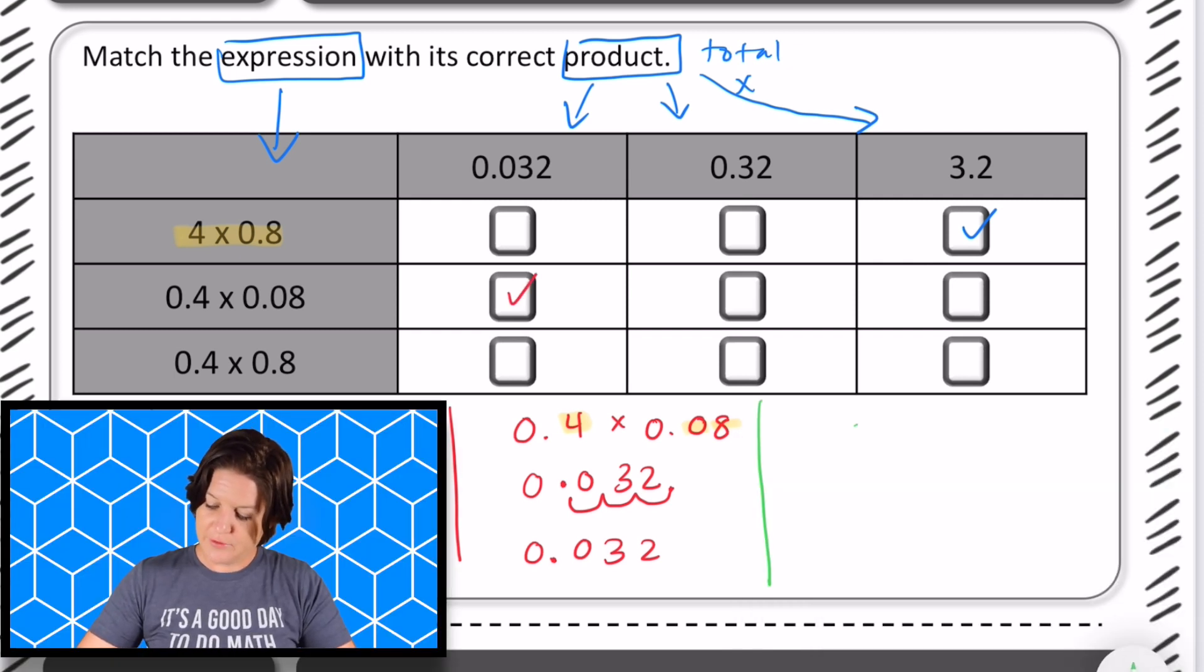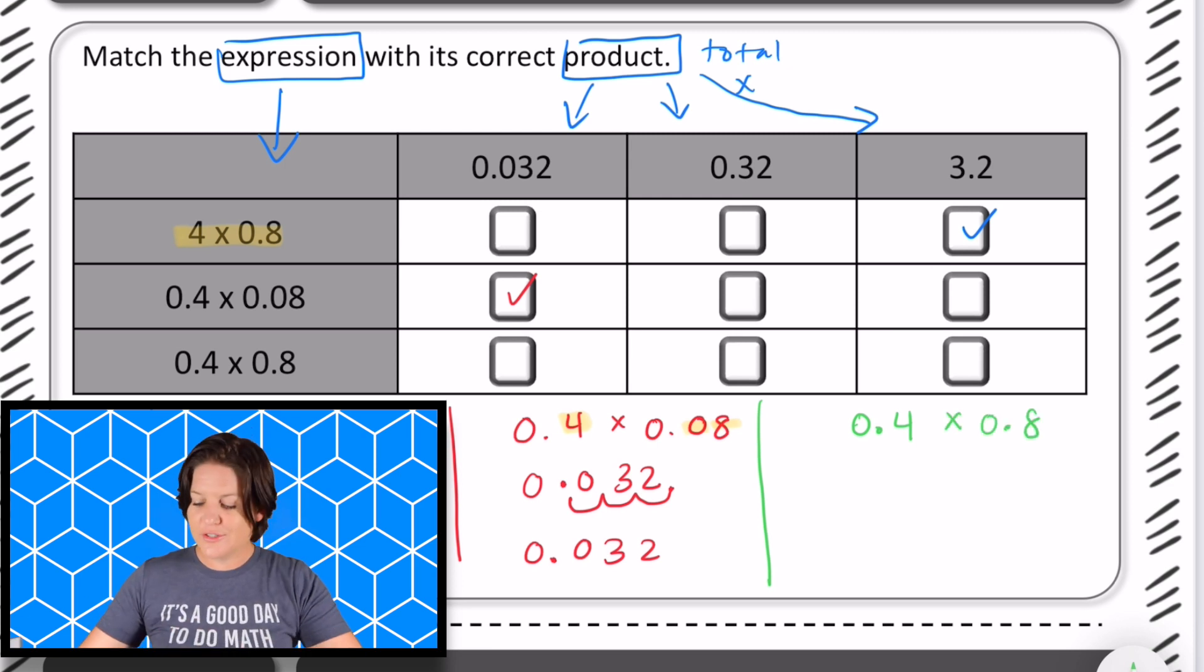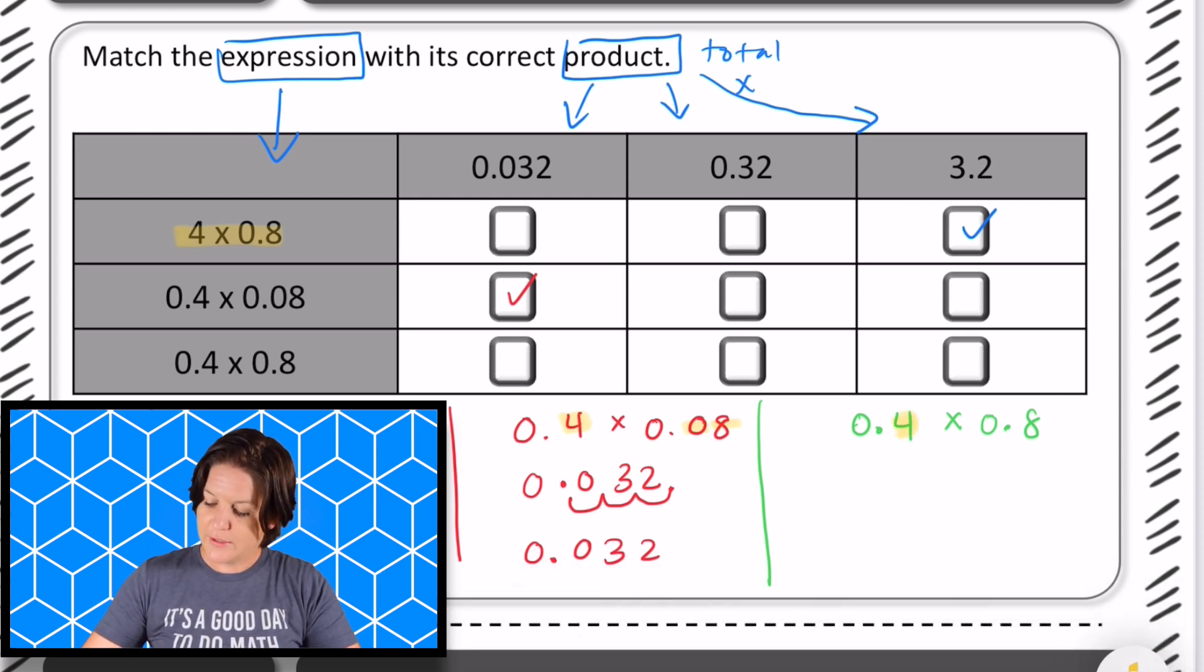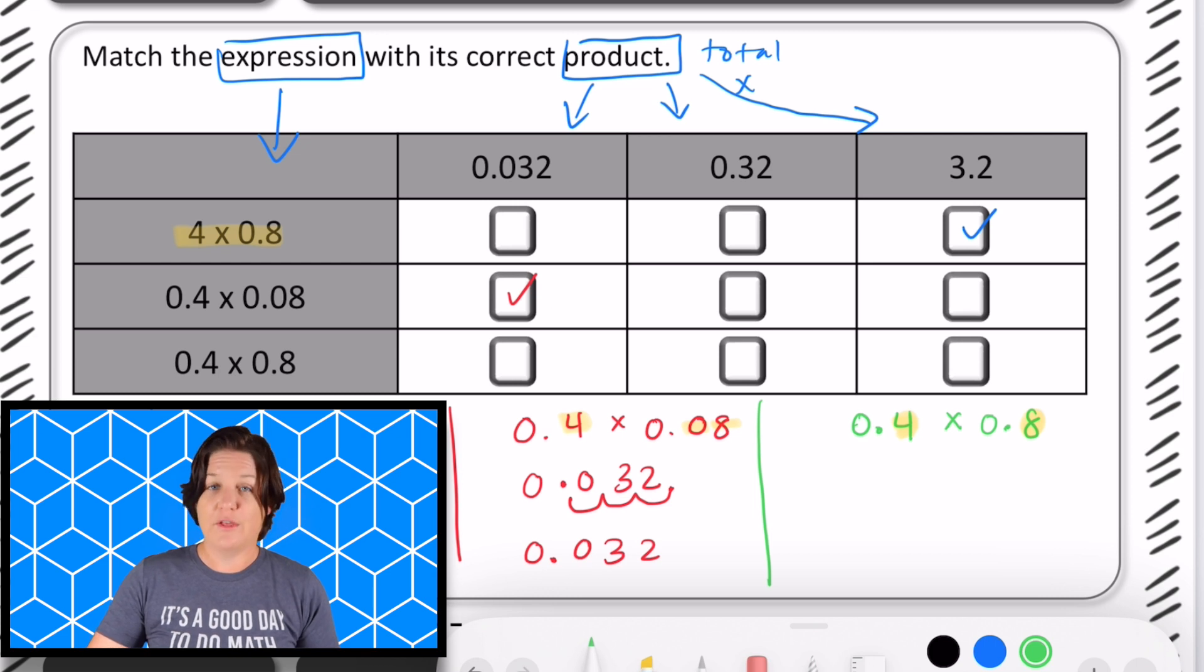And finally, we have 0.4 × 0.8. These are just patterns with decimals going on here. We have one, two digits that are behind the decimal, so my product is also going to have two digits behind the decimal. We know that 4 × 8 = 32.